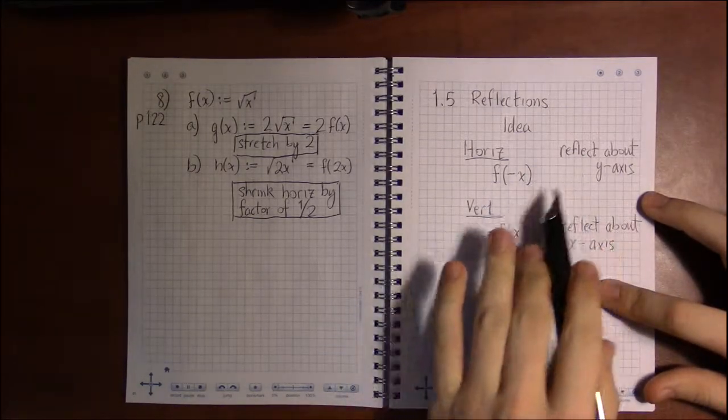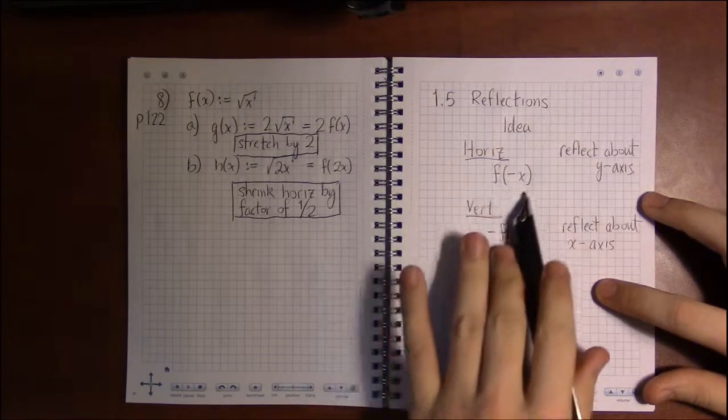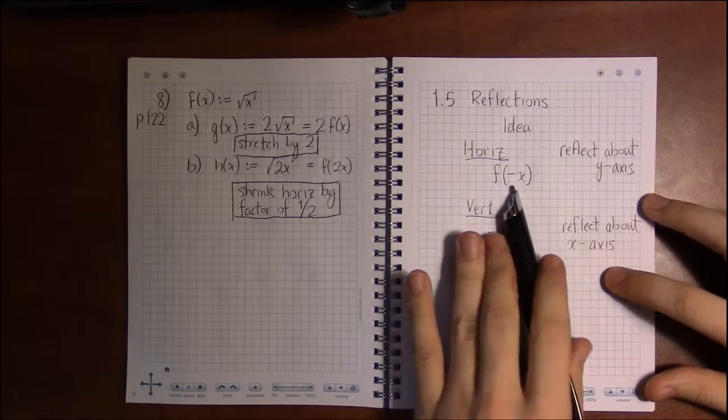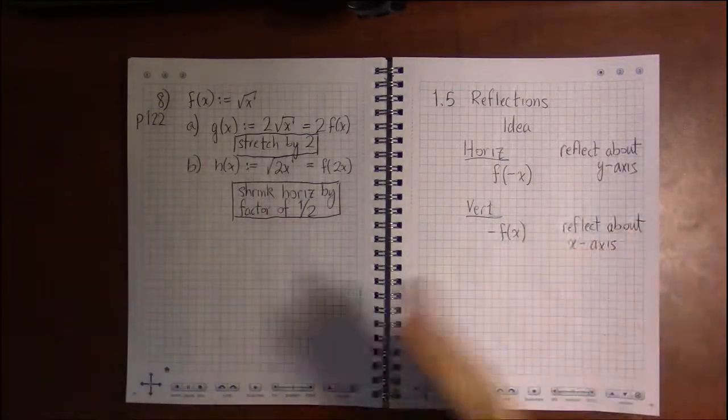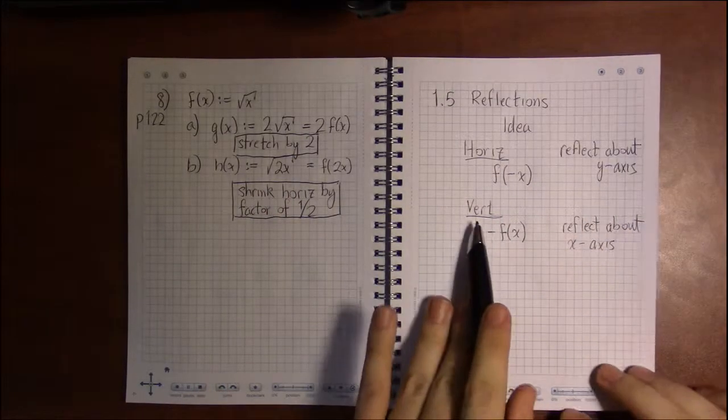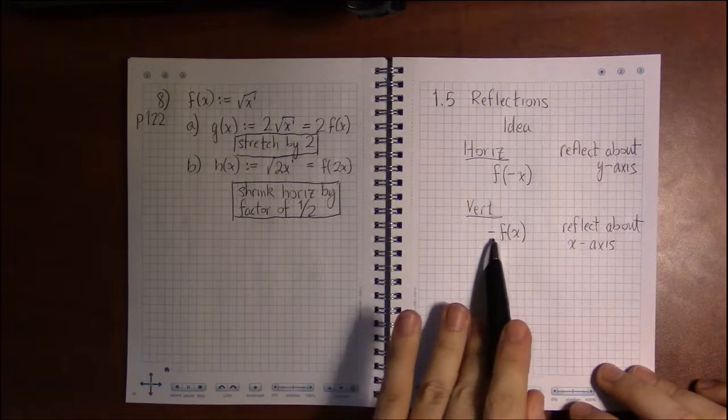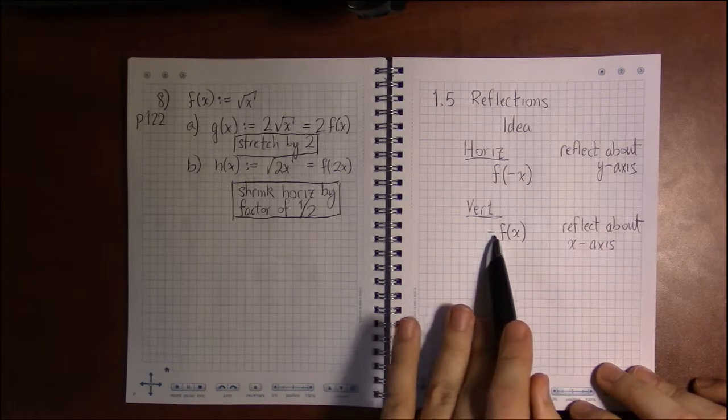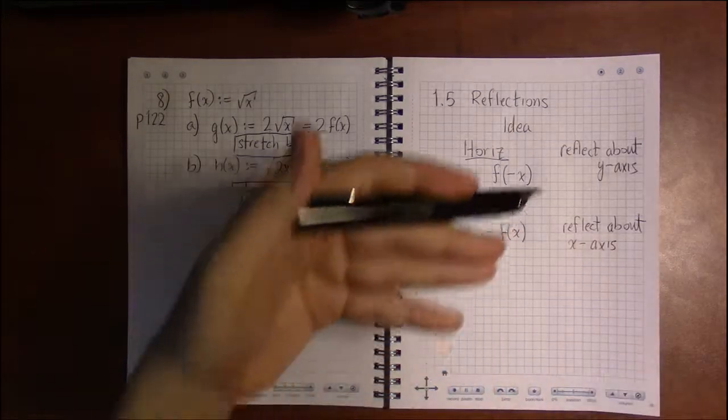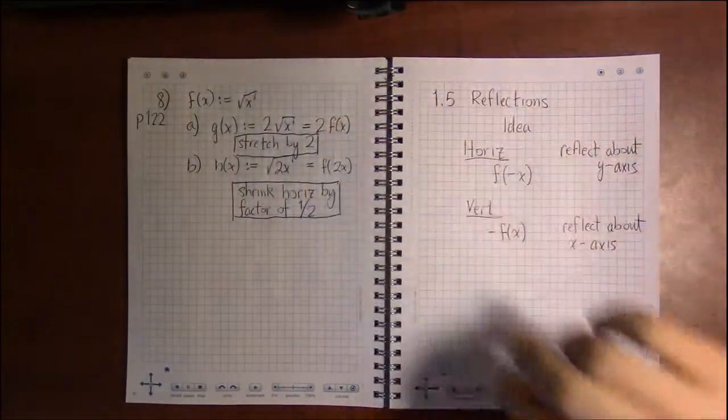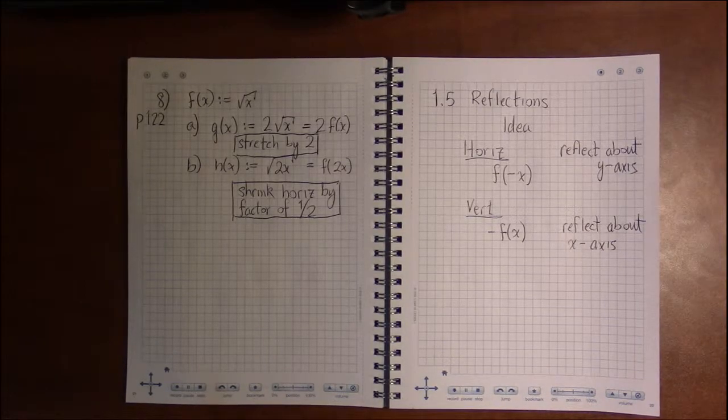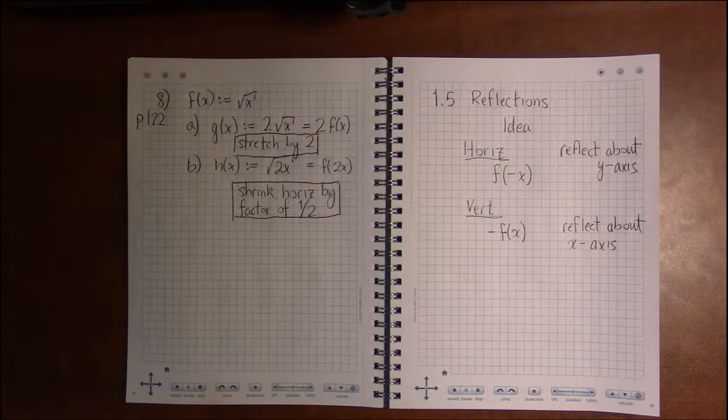And that's all these do. f of minus x—since the minus is as close as it can get, it reflects horizontally. And the vertical transformation is where the minus isn't as close to the x as it could be; it's outside here, and that's going to do a vertical flip. So if we take a look at an example of this...